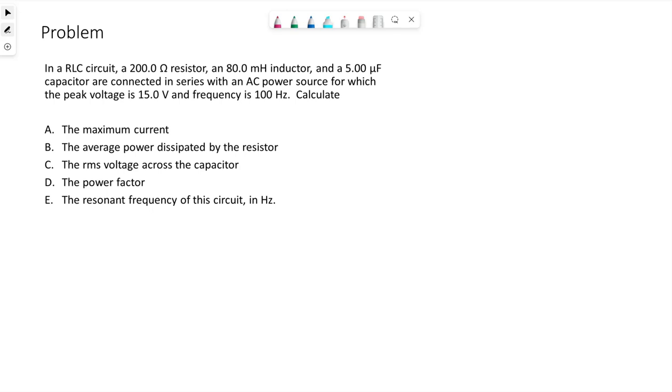So one more example here with multiple parts. In an RLC circuit, a 200 ohm resistor, an 80 millihenry inductor, and a 5 microfarad capacitor are connected in series with an AC power source for which the peak voltage is 15 volts and frequency is 100 hertz.